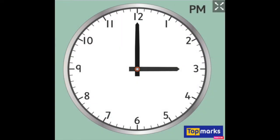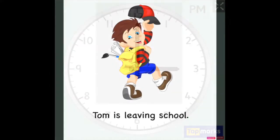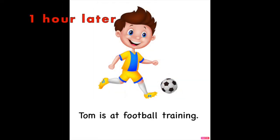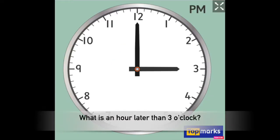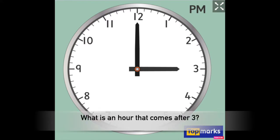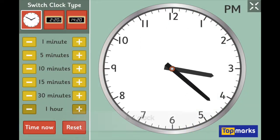Here is another one. What time is it now? It is three o'clock. Tom leaves school at three o'clock. He has football training one hour later. What time has he got football training at? What is an hour later than three o'clock — what is the number that comes after three when you are counting? The answer is four o'clock.